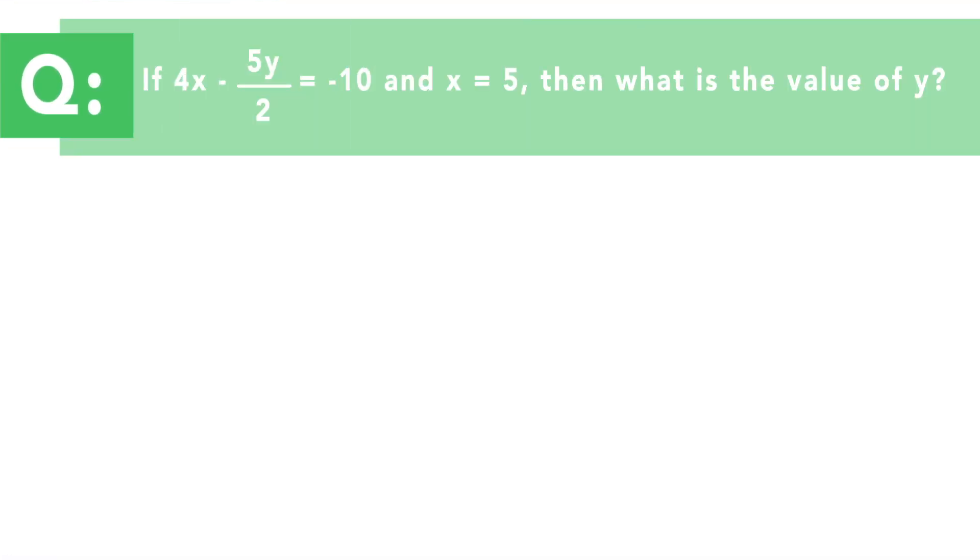Now let's look at the last question. If 4x minus 5y over 2 equals negative 10, and x equals 5, then what is the value of y? Now this is a very, very common question. You are almost going to see at least one question, probably multiple questions like this on the exam. And essentially, it's solving for some sort of variable. Now you'll have to reorder or balance the equation to isolate the variable and get the remaining value.